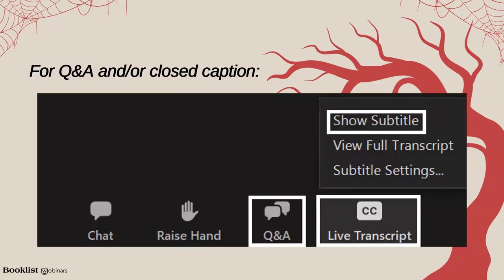Booklist offers closed captioning on all webinars. To enable or disable captions on your screen, please look for and click the live transcript icon on the toolbar. From there, you can select show or hide subtitles from the menu that appears. You can adjust the size of the captions at any time by selecting subtitle settings. Booklist expects all participants to maintain an atmosphere of respect and fairness. Anyone who violates the standard of behavior, including engaging in any form of harassment, may at the discretion of the organizers be immediately removed.